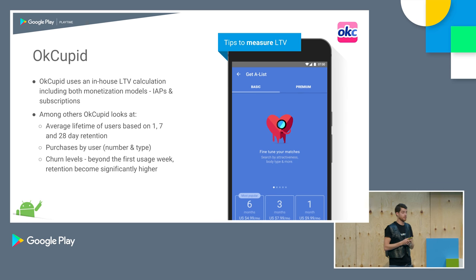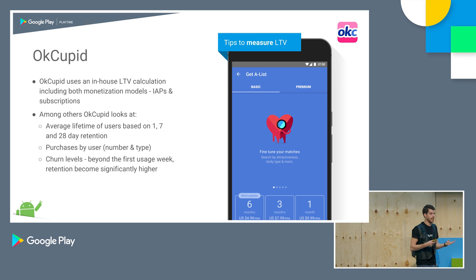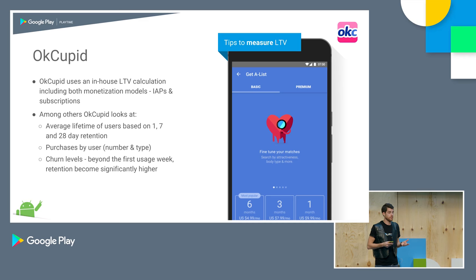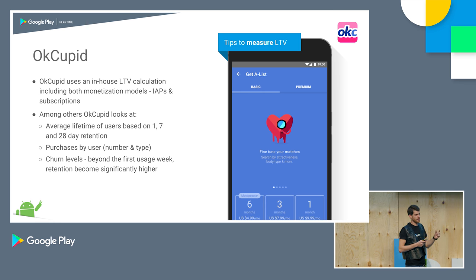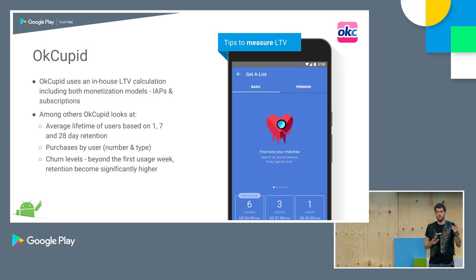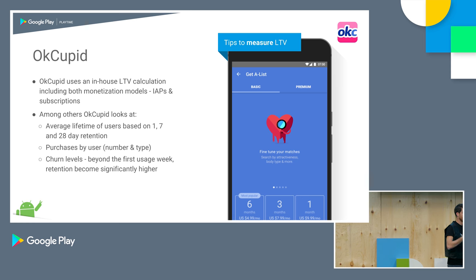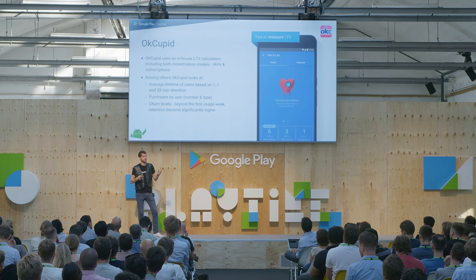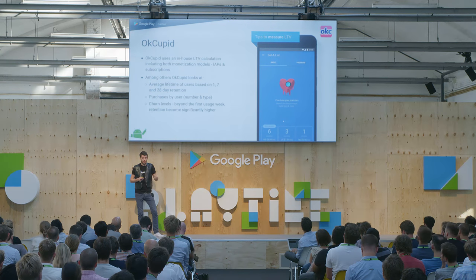OkCupid is one of the biggest dating apps on Google Play. They use two business models — a hybrid — but we'll focus on in-app purchases for now. OkCupid uses an in-house customized formula that includes both business models. Key factors that impact how they set variables: first, they look at signals that show engagement — if a user is in an active messaging thread, having conversations, that's an engagement signal. They use those to define engagement, retention, and churn rates.